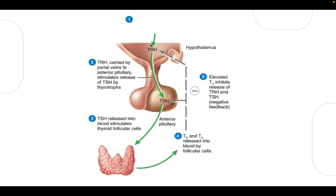First of all, we have the thyroid-releasing hormone, which is produced by the hypothalamus. It travels down to the adenohypophysis through the portal system to stimulate the formation of the thyroid-stimulating hormone. The TSH then stimulates iodine uptake and growth of the thyroid gland. The thyroid gland releases T3 and T4 by the follicular cells into the blood. TSH is down-regulated by T3 and T4, and TRH is only down-regulated by T3.